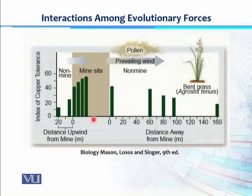The bent grass plants are growing very well at mining sites because natural selection supports the heavy metal tolerance gene or allele. As a result, their survival and reproductive capacity is higher and they have a thick, high-density population in that area of the mining site.